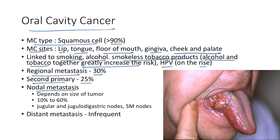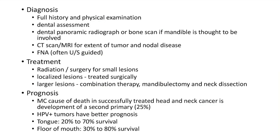Nodal metastasis in oral cavity cancer depends on tumor size, seen in 10 to 60% of cases. It usually spreads to jugular, jugulodigastric, and submandibular nodes. Distant metastasis is infrequent.